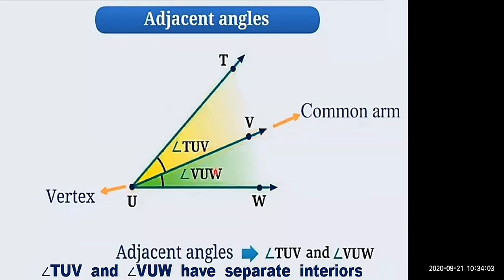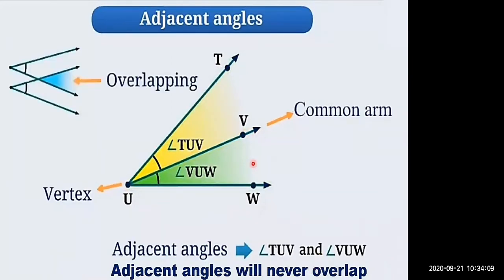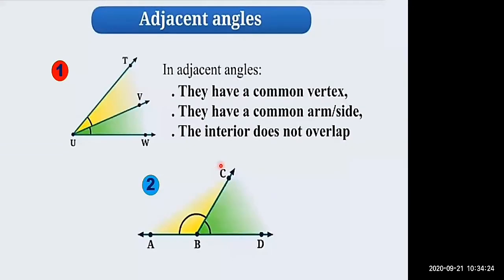Adjacent angles have separate interiors — they will never overlap. Adjacent angles will never overlap; they always have separate interiors. Now look at figure 1 and figure 2 — are the angles shown adjacent angles?